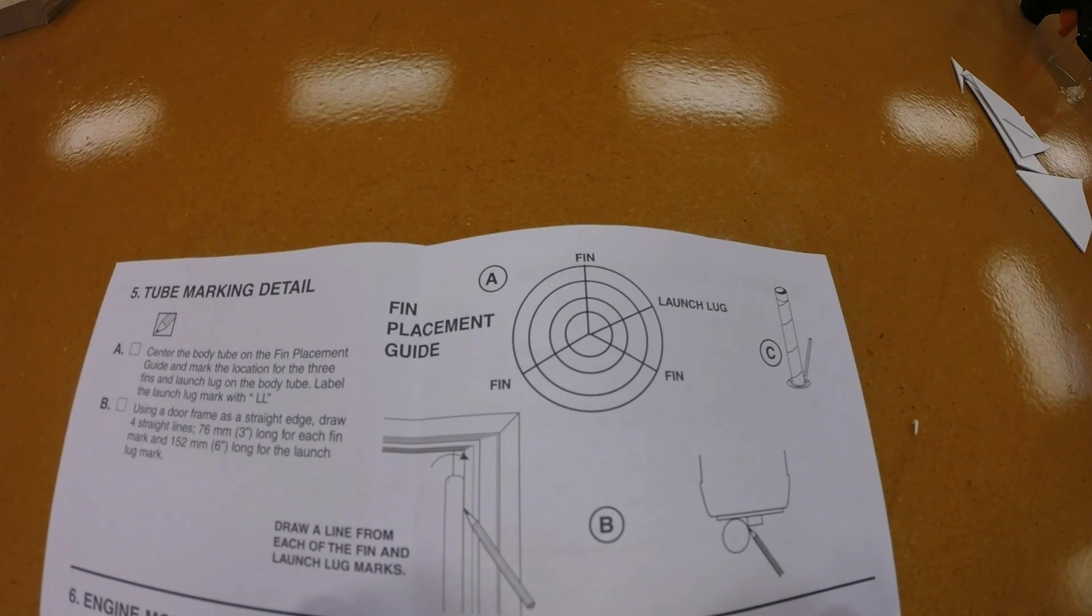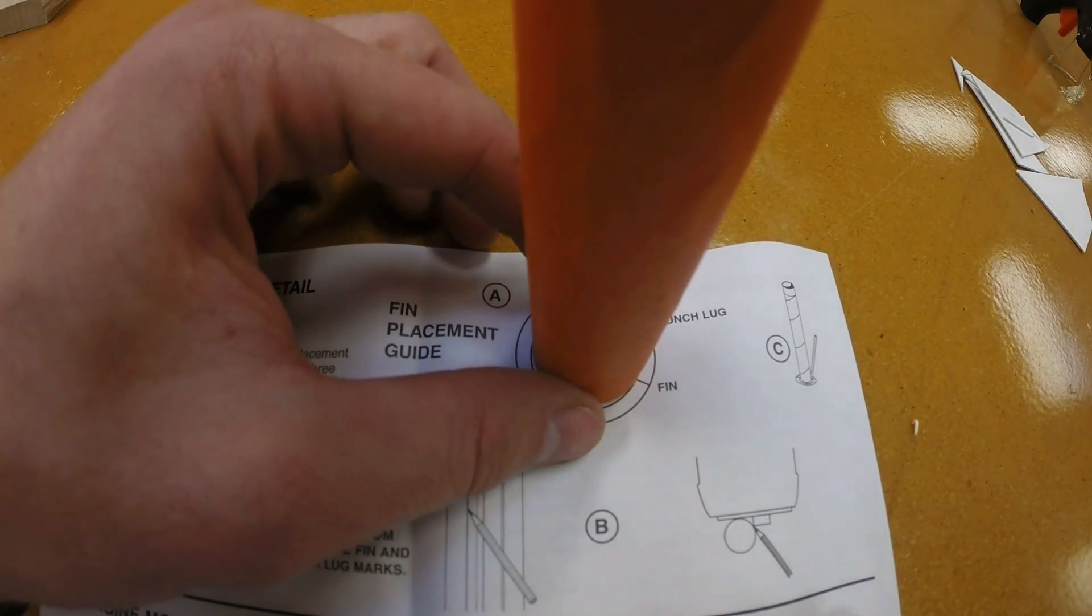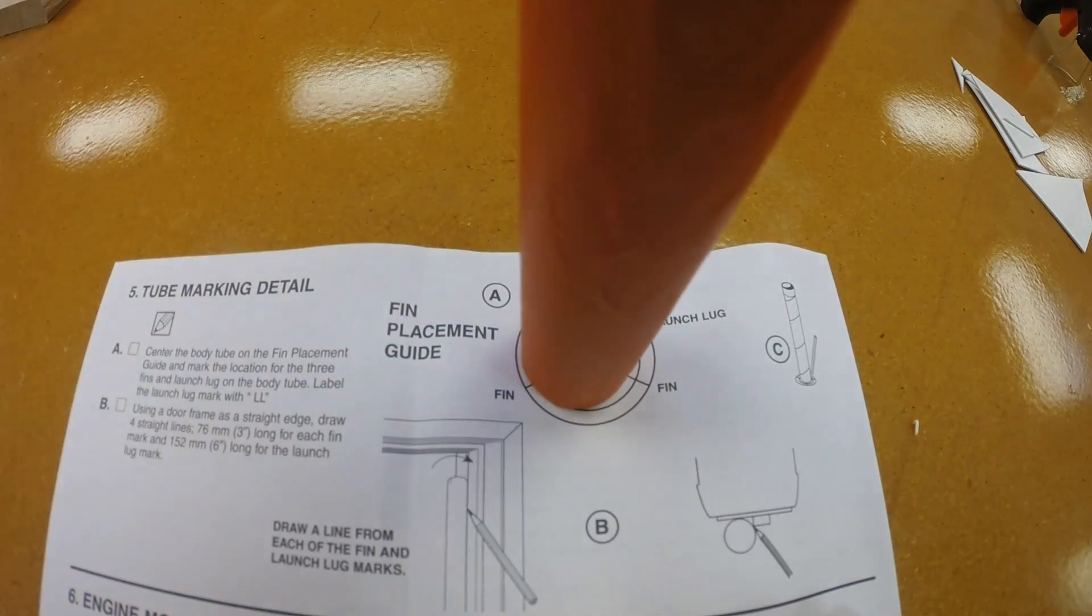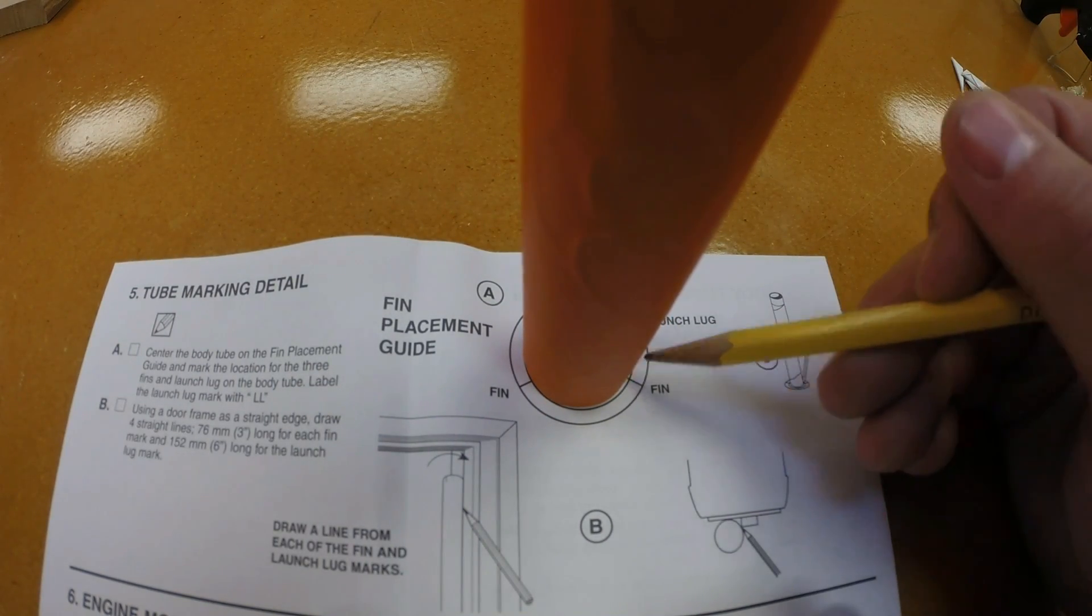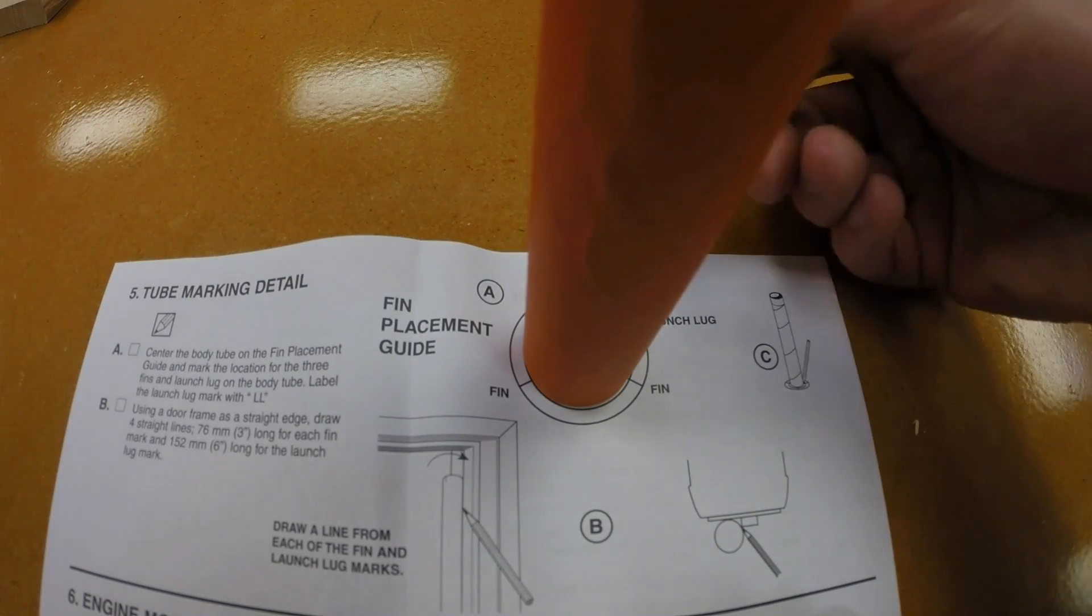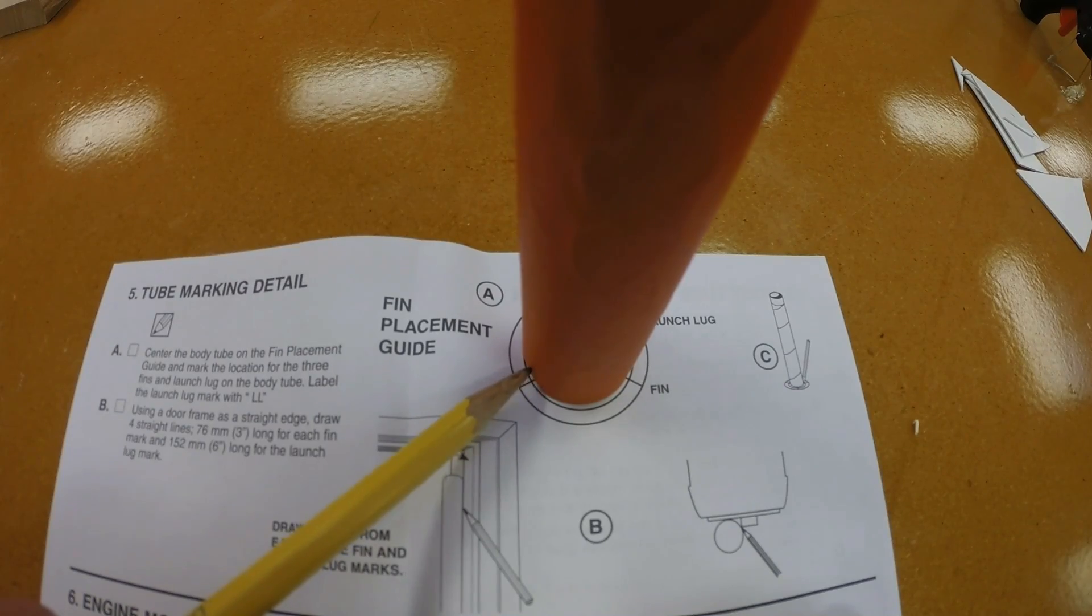Your instructions give you this terrific fin placement guide. You're going to stand your body tube up onto its end right in the middle of the placement guide and then with a pencil make a mark wherever it tells you that there's going to be a fin. Notice that there's also a mark for the launch lug. Don't forget to make that one as well.